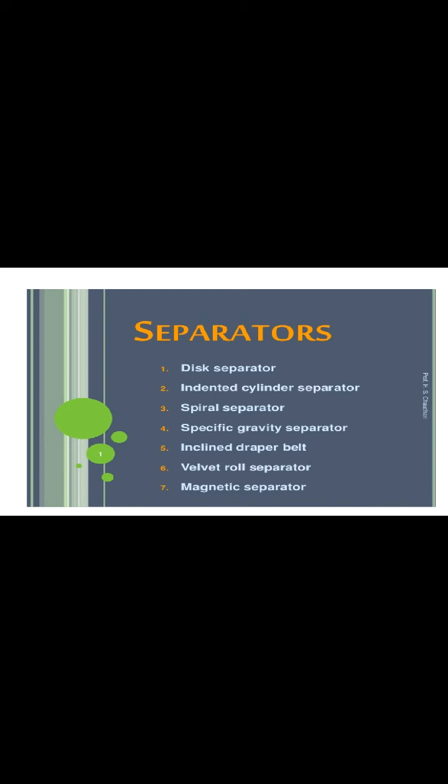The types of separators for seed separation on the basis of physical characteristics are: disc separator, indented cylinder separator, spiral separator, specific gravity separator, inclined rubber belt, velvet roll separator, and magnetic separator.